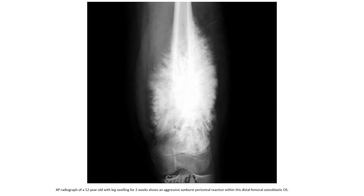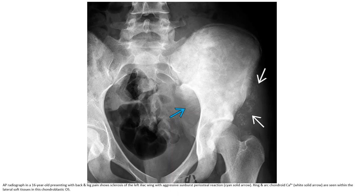This is an AP radiograph of a 12-year-old with leg swelling for 2 weeks, showing a sunburst periosteal reaction in the distal femur. Also shown is an AP radiograph in a 16-year-old with back and leg pain, demonstrating sclerosis of the left pelvis with aggressive sunburst periosteal reaction and ring-and-arc chondroid calcification within the soft tissue.